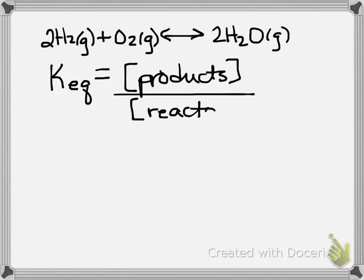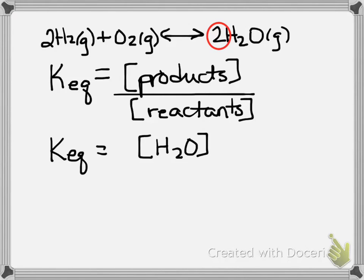And for this class, we're going to be able to write the expression, but we are not really going to be solving for the actual values. So if we're looking at this particular reaction, our product here is water. So our KEQ on the top is going to be the concentration, that's what the brackets mean, concentration of water. And because there's this two in front of the water, we're going to square this expression. So that's going to represent the concentration of products.